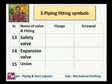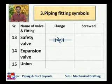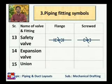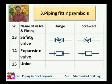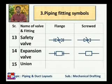Safety valve is used in the pipeline for pipeline safety. Its symbol is drawn with two lines for a flanged connection and without lines for a screwed connection. The expansion valve is shown by a rectangle — with two flanges for a flanged connection, or just a plain rectangle for a screwed connection. This symbol indicates that fluid expands inside the valve, pressure reduces, and expansion occurs.